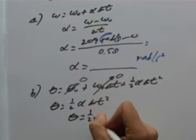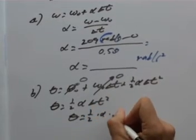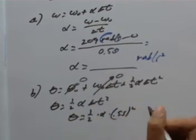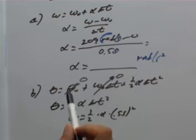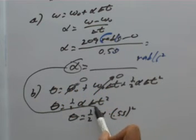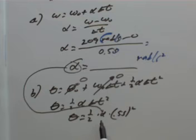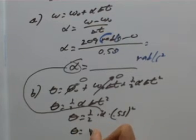I think we're in pretty good shape to plug things in here, so I can just get the one half times the alpha times the 0.5 seconds, all of that squared. Yes, the alpha that we're plugging in is the one you got from part A, because that's the angular acceleration of the drill that caused it to speed up.